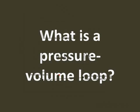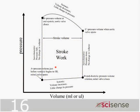Let's take a look at what a pressure-volume loop looks like. This is a plot of the pressure inside the ventricle versus the volume of blood inside the ventricle. We do studies with dogs and sheep, so we represent it in milliliters, but we also do studies with mice and rats, so we represent it in microliters. This is a graph of the pressure in the ventricle and the volume of the ventricle at various times.